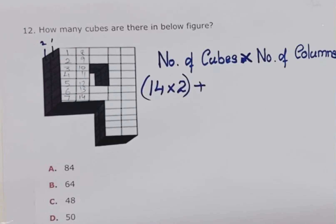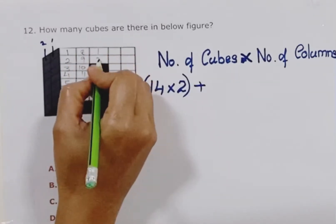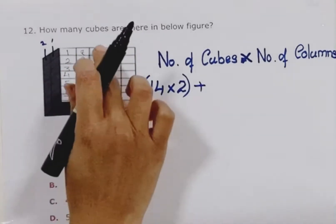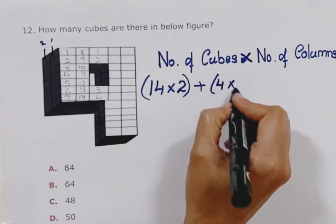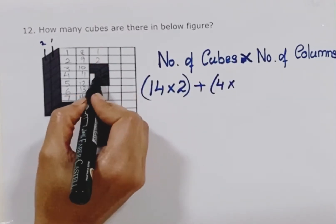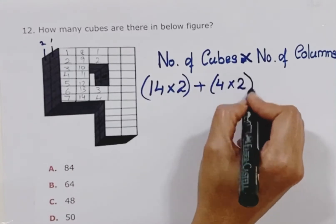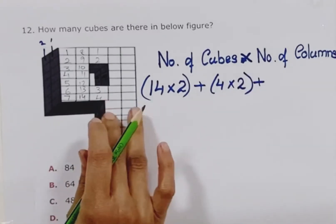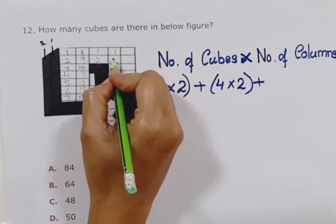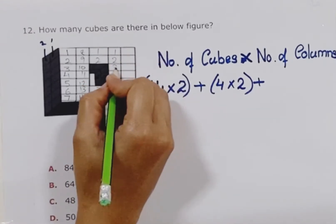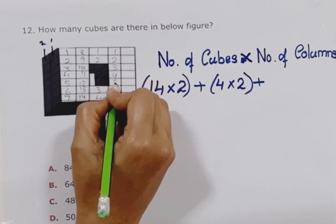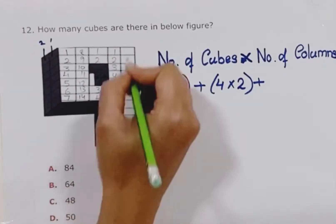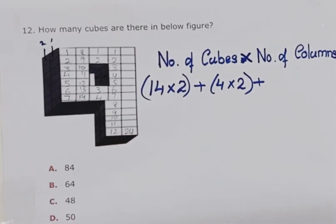Next section: 1, 2, 3, 4 — so 4 cubes. How many columns? 1, 2 — there are 2 columns, and these 2 rows are similar. So let's count the number of cubes in these 2 columns: 1, 2, 3. So there are 12, and 12 plus 12 is 24.